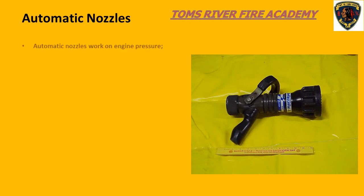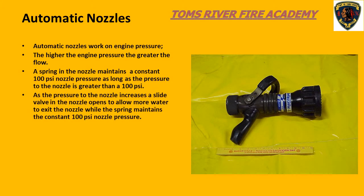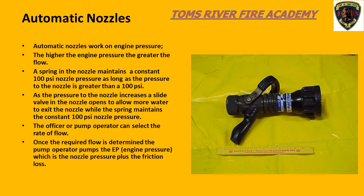Automatic nozzles work on engine pressure — the higher the engine pressure, the greater the flow. The automatic nozzle uses a spring to maintain a nozzle pressure of 100 psi, as long as the pressure to the nozzle is greater than 100 psi. As the pump operator increases the pump pressure, a slide valve inside the nozzle opens to allow more water to move through. The spring control works in conjunction with the slide valve to maintain 100 psi nozzle pressure.